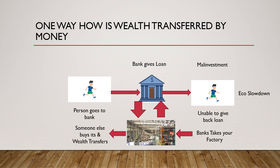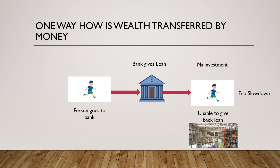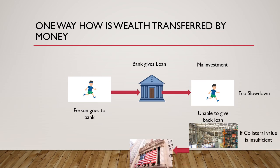In a second scenario, the factory value or inventory is insufficient for the bank to recover the loan. The bank then issues equity and sells it to people. The existing equity holders lose money because the bank is selling more equity in the market, increasing supply and diluting existing holdings. Wealth has now transferred from the equity holders as well.